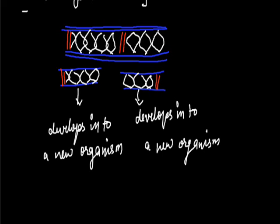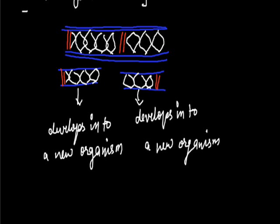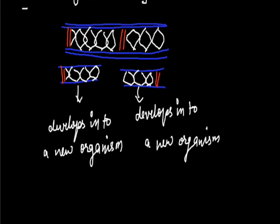Fragmentation is a type of asexual reproduction as well as a regeneration ability of the organism.